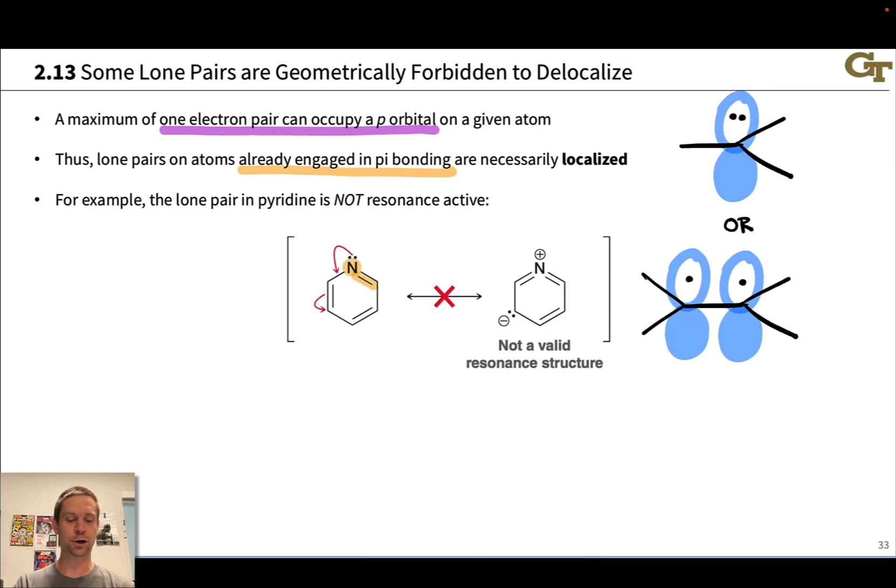And the lone pair in pyridine, which is this molecule here, is a classic example of this. You may look at pyridine and first say to yourself, I've spotted an allylic lone pair. But this is not an allylic lone pair because that nitrogen is already engaged in pi bonding. And so electron flow like this is not valid. This lone pair is actually in an sp2 hybrid and we're going to look at orbitals that show this in a little more detail. So the upshot of all this is this is not valid electron flow and this is not a valid resonance structure.